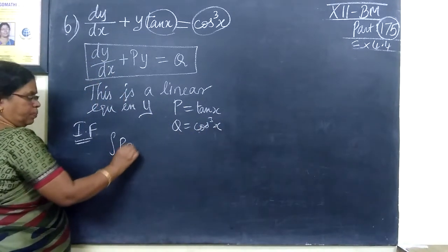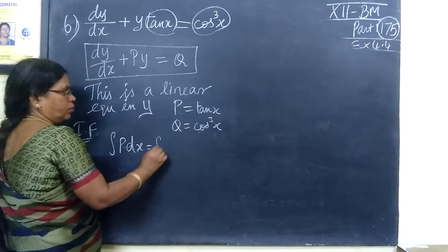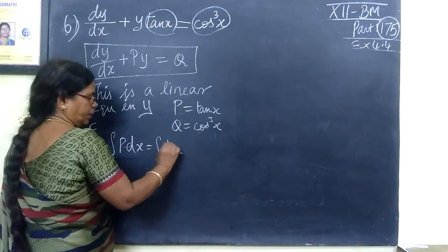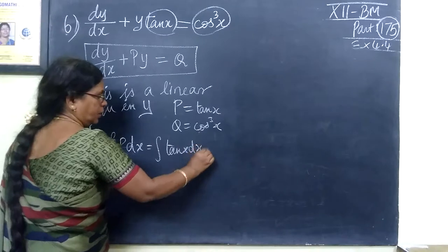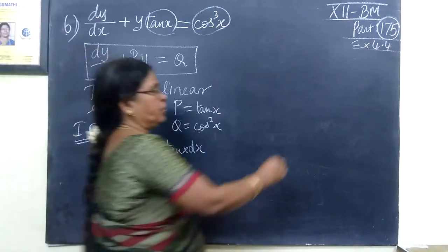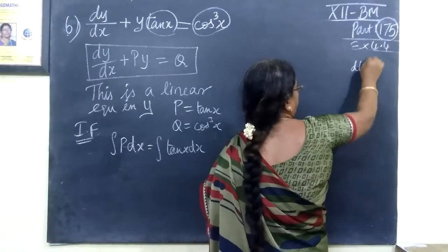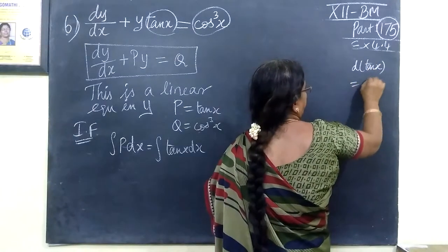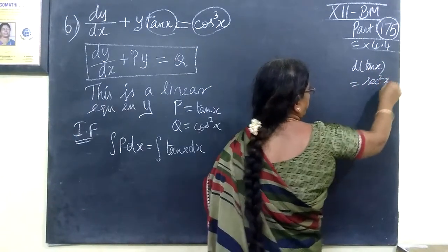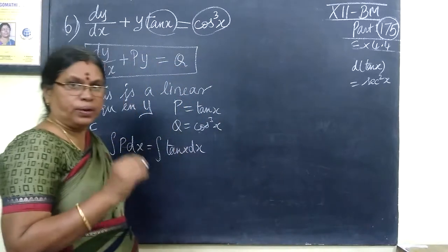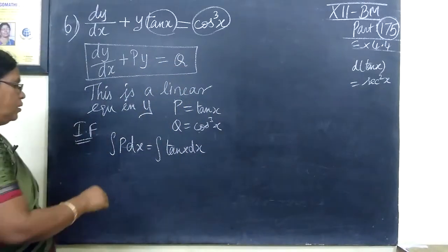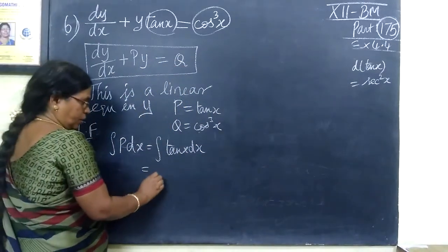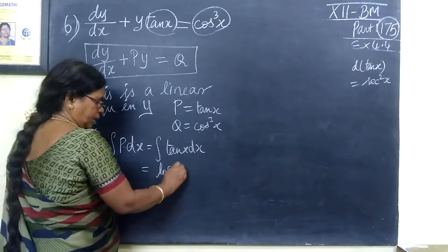First, integrate. Integrating factor: tan x dx. Differentiation of tan x equals sec²x. tan x is the differentiation of sec²x. Then, here is the integration of sec²x.